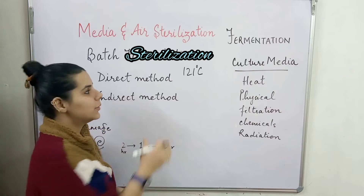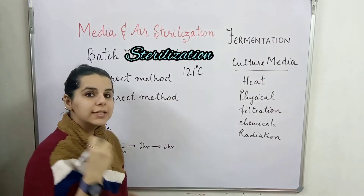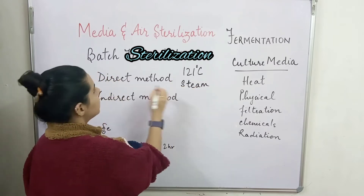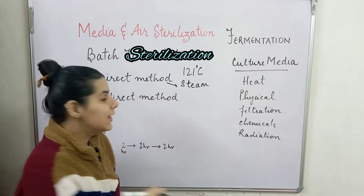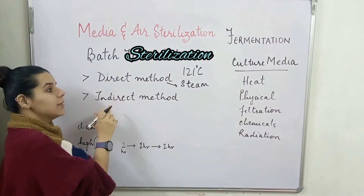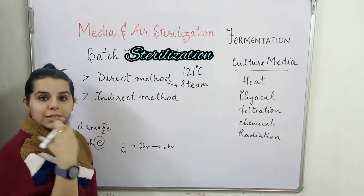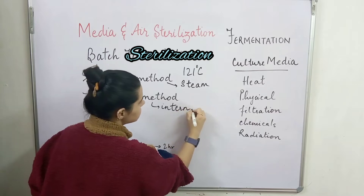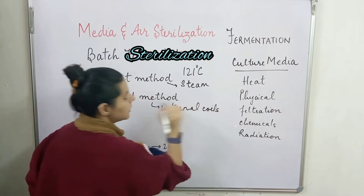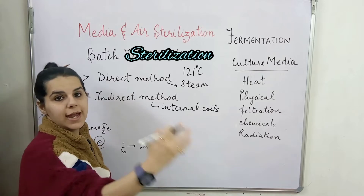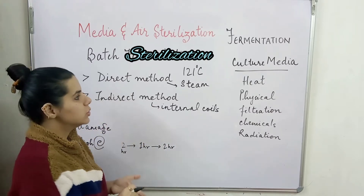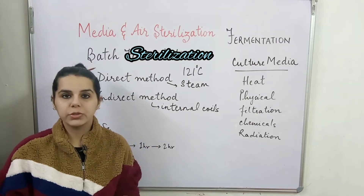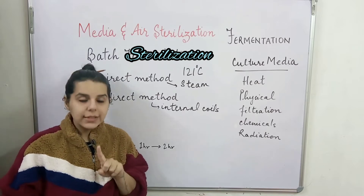In the direct method, we directly inject the steam. In the case of the indirect method, the steam is passed through internal coils that are internally present, and through these coils the steam is passed and the sterilization process occurs.